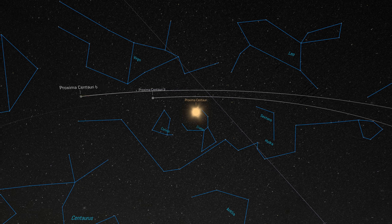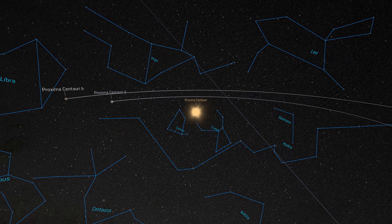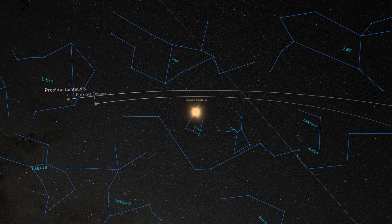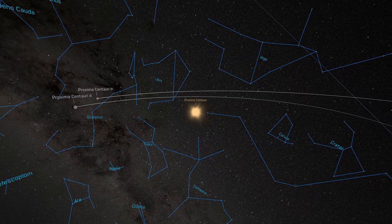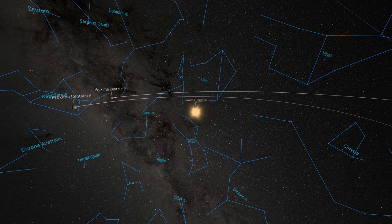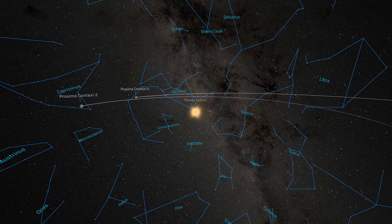The light we see from Proxima Centauri here on Earth is already four years old. In other words, if we could travel at light speed, it would take us four years to reach Proxima Centauri. We say then that Proxima Centauri is four light years away.